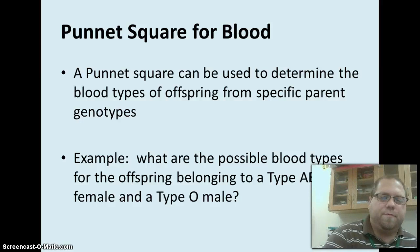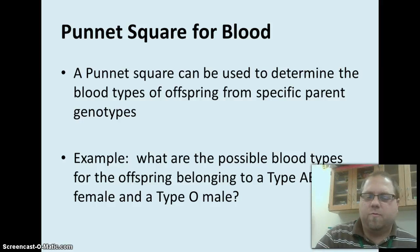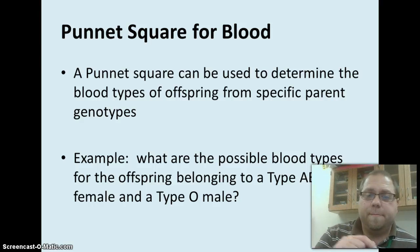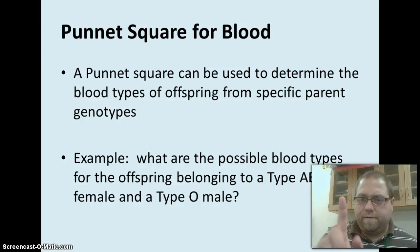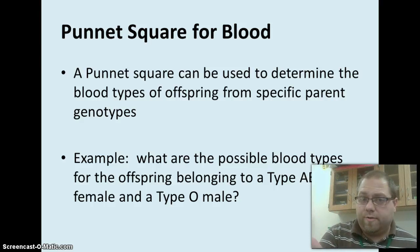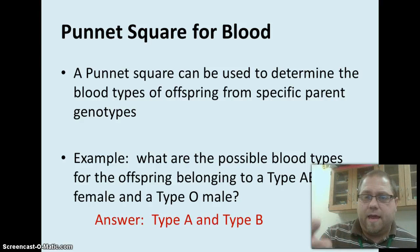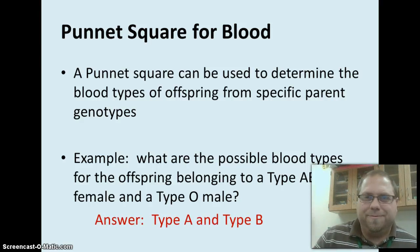We have an example here for the Punnett square. What are the possible blood types for the offspring belonging to a type AB female and type O male? Well, if you did your square, you'd have AB at the top. O is recessive, so you have to have two O's — OO. And when you put that together, your possibilities are that you would have either type A, because it would be AO, or type B, which would be BO.